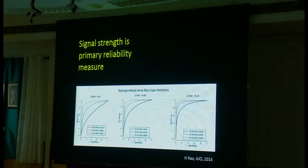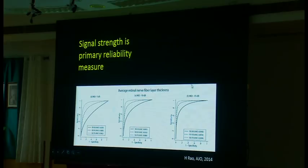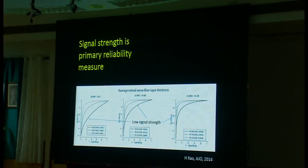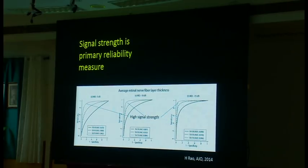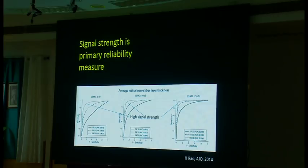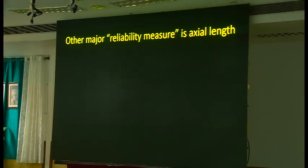A study from Harsha Rao looks at how predictive a test is based on visual field severity and signal strength. Scans with low signal strength showed much poorer ability to differentiate normals from various levels of glaucoma compared to eyes with high signal strength. A high signal strength test does a much better job, while a low signal strength test — especially in early disease — is something you just can't believe very much.